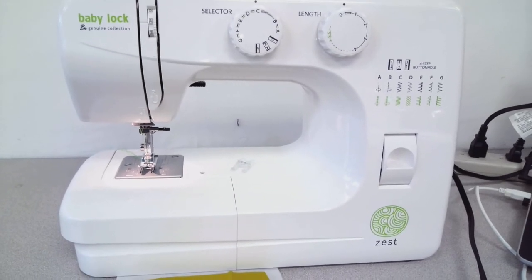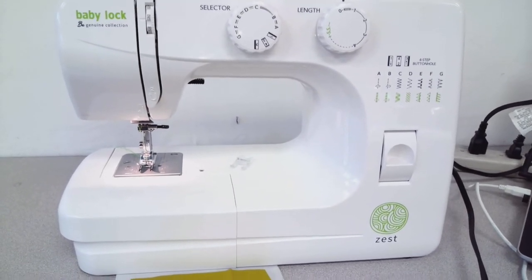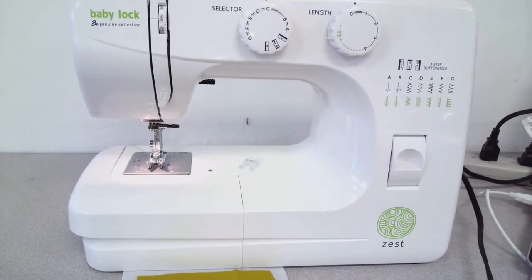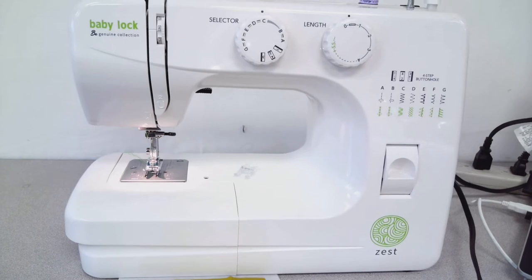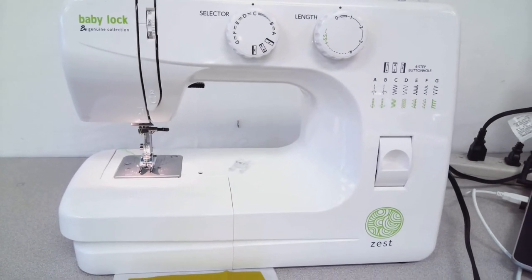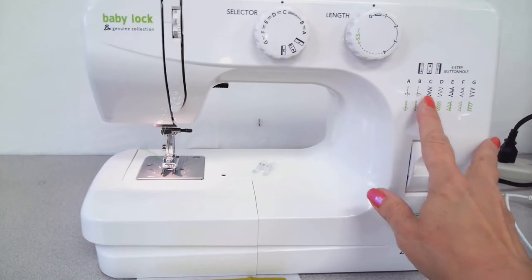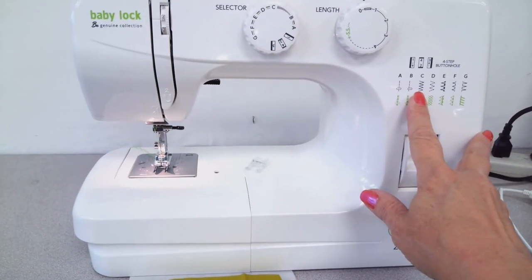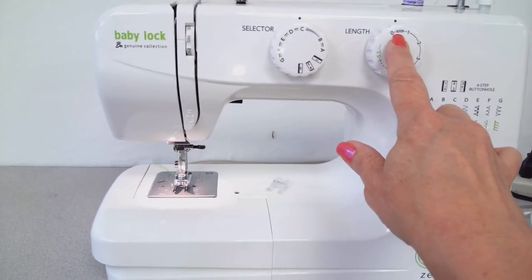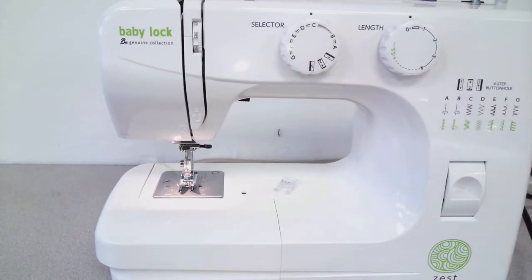Hi, this is Gina with your Kingdom Sewing Minute Clinic. Today I'd like to focus on doing satin stitching. I'm working on the Baby Lock Zest here. This is a more basic mechanical machine. I've got the machine set up with my zigzag stitch with a stitch length of about .4 or .5, so we get a nice short stitch.